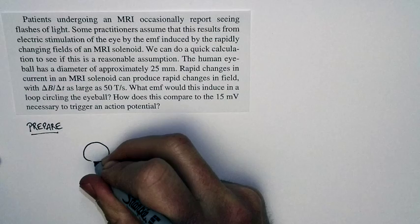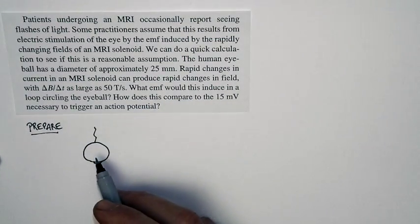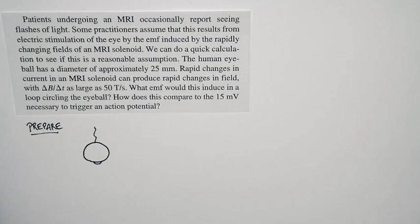So think about this. So here's your eyeball. Okay, here's the front of the eyeball. Back here's where the optic nerve comes out. If there's a really strong magnetic field change across the eyeball, it will induce an EMF.